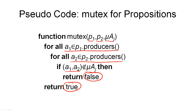You may ask what happened to the second part of the definition where a single action produces both propositions. This is actually covered by the algorithm: when you select A1 and A2 to be the same action, it produces both propositions, and of course an action is never mutually exclusive with itself. So this case is covered by the simple algorithm. Regarding time complexity, we have two loops over all possible actions. If we assume a maximum of m possible actions including no-op operations, this algorithm runs in O(m²), which is polynomial.